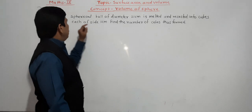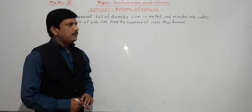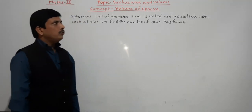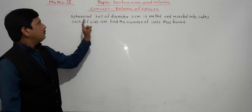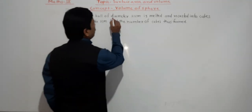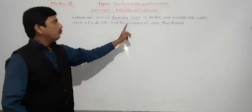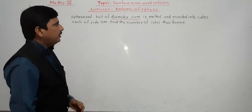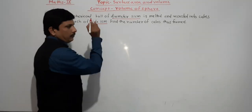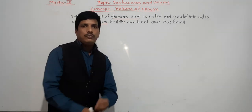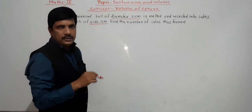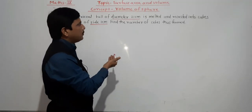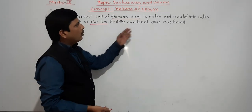The second problem: a spherical ball of diameter 21 cm is melted and recast into cubes each of side 1 cm. Find the number of cubes formed. Since the sphere is melted, we find the volume of the sphere, then divide by the volume of one cube to get the number of cubes.